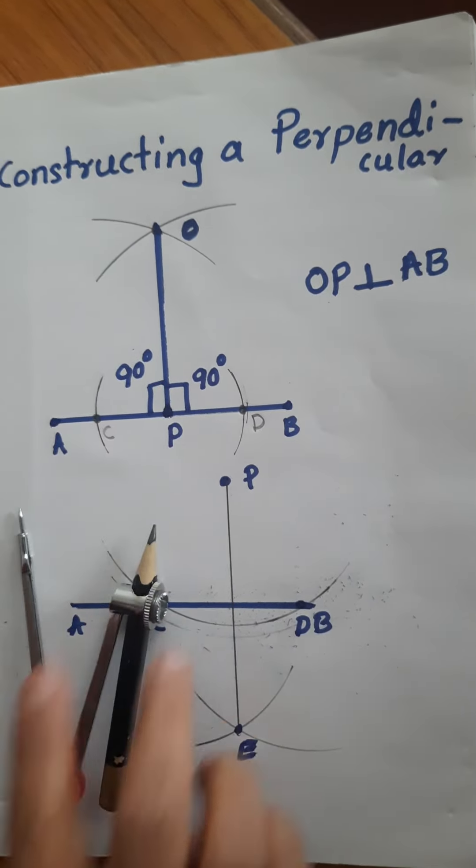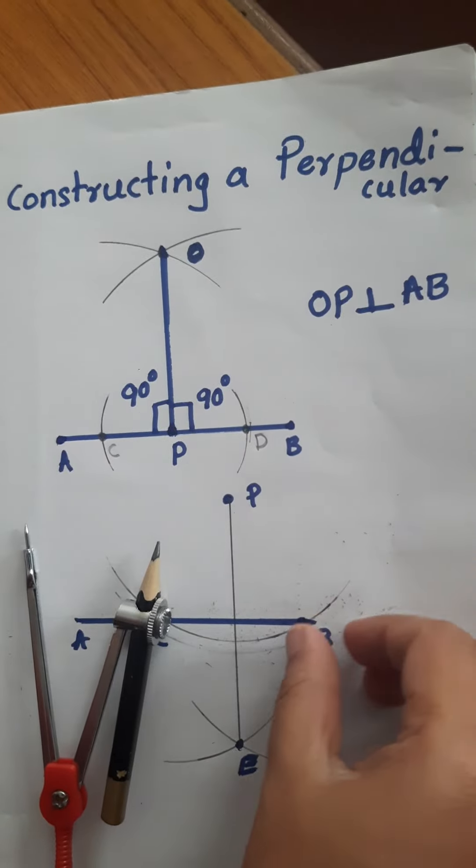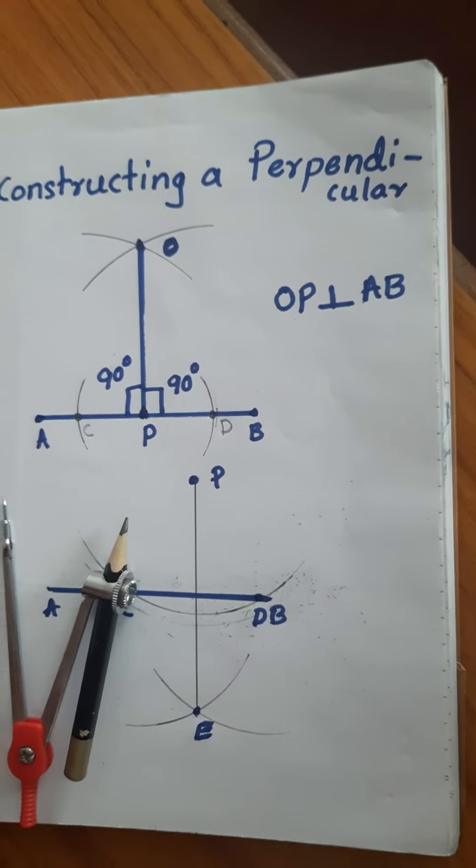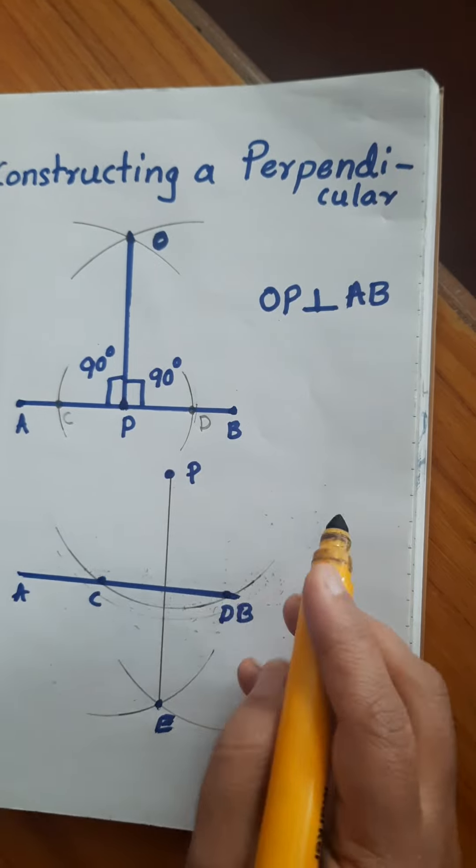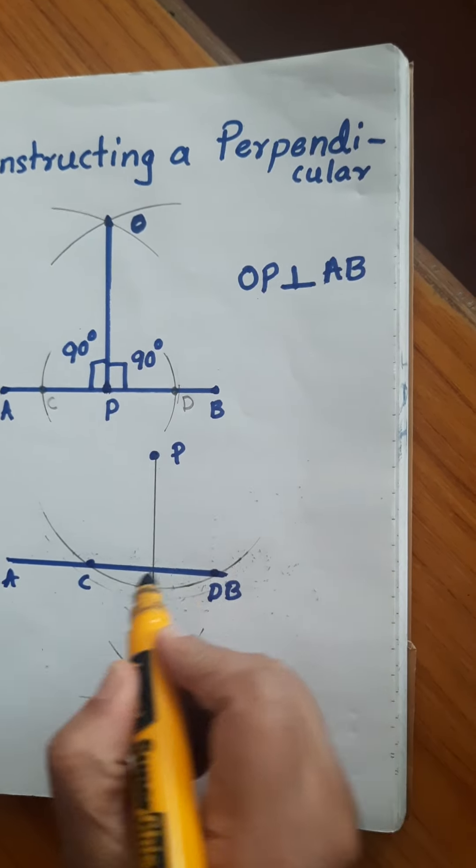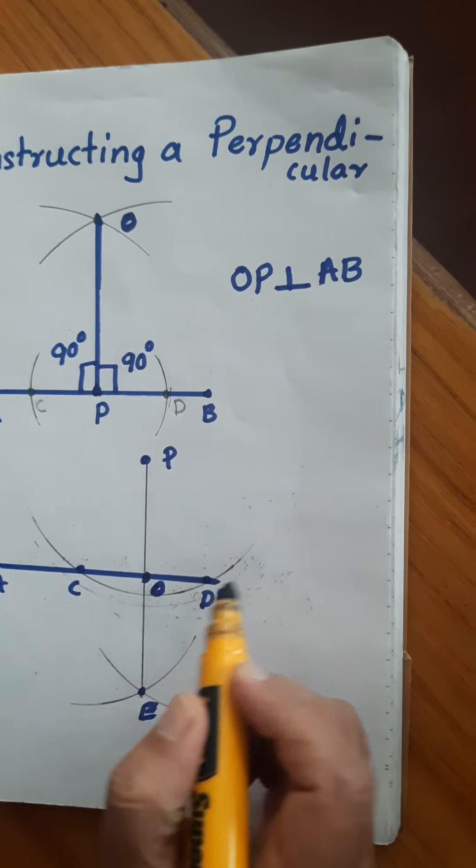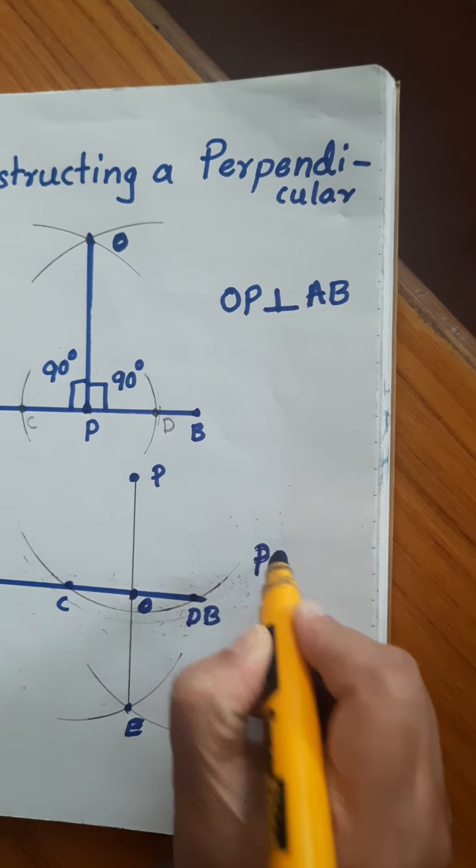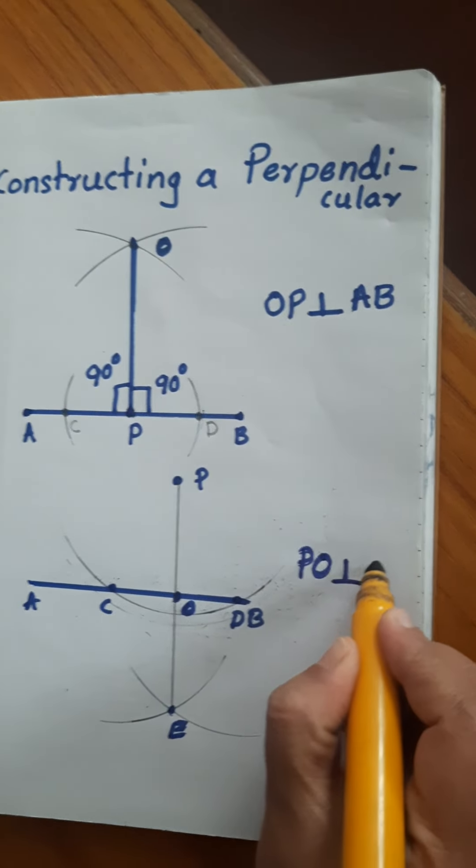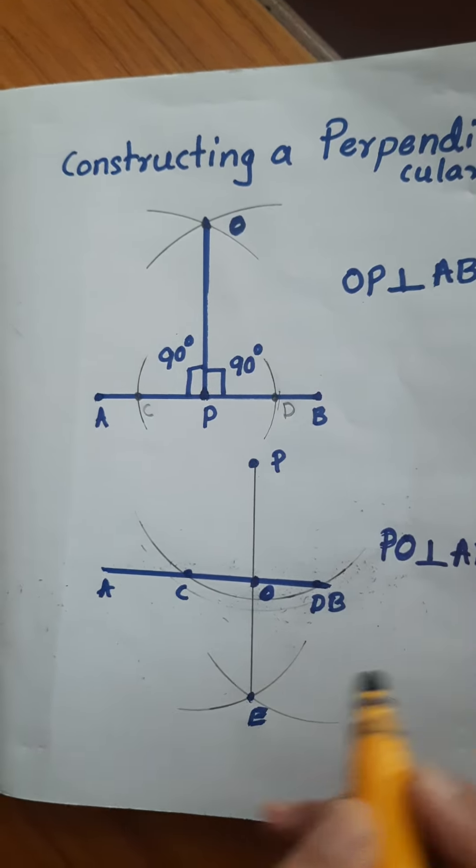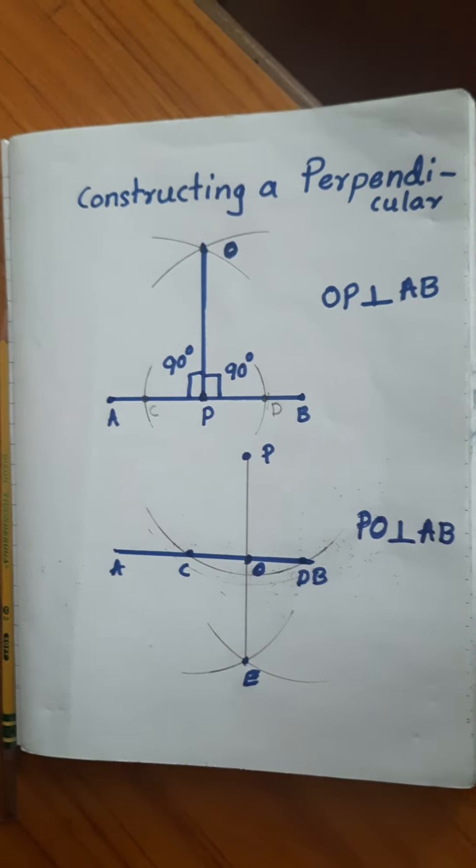This is a perpendicular from P. PE, or this point can be named as O, PO is perpendicular to AB line segment. Thank you.